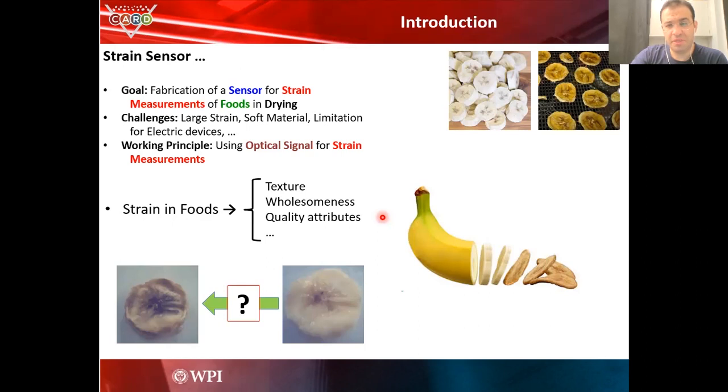But doing this measurement is not easy. It comes with a bunch of limitations. For example, here we're dealing with large strain. The amount of deformation is quite large and foods are quite soft material. So using conventional strain gauge is not a durable approach to do the measurement here.